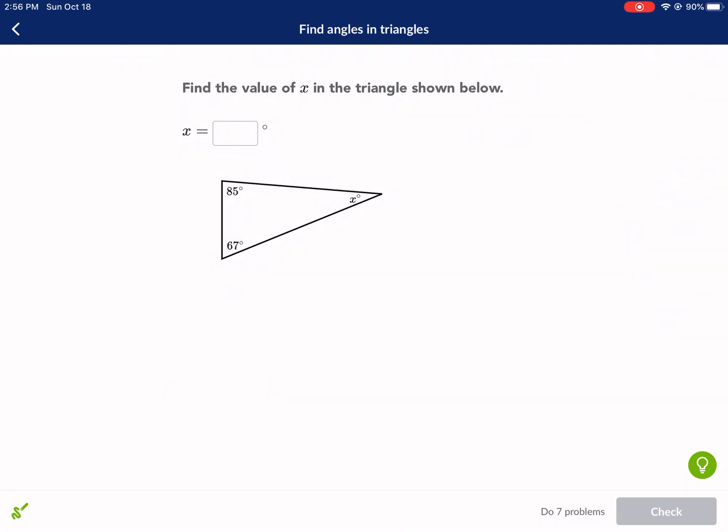Hello everyone and welcome to a Khan Academy tutorial on finding angles in triangles. Let's go ahead and jump right into this. We have find the value of X in the triangle shown below, X equals blank.